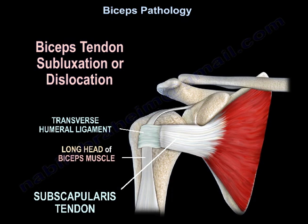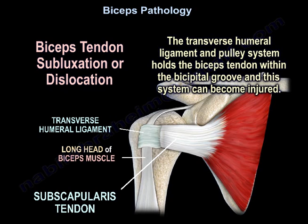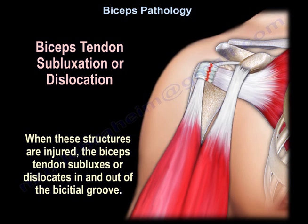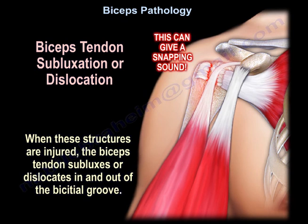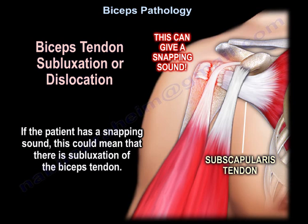Biceps tendon subluxation or dislocation. The transverse humeral ligament and the pulley system hold the biceps tendon within the bicipital groove, and this system can be injured. When these structures are injured, the biceps tendon subluxes or dislocates in and out of the bicipital groove, and it can give a snapping sound. If the patient has a snapping sound, it could mean the biceps is subluxing.